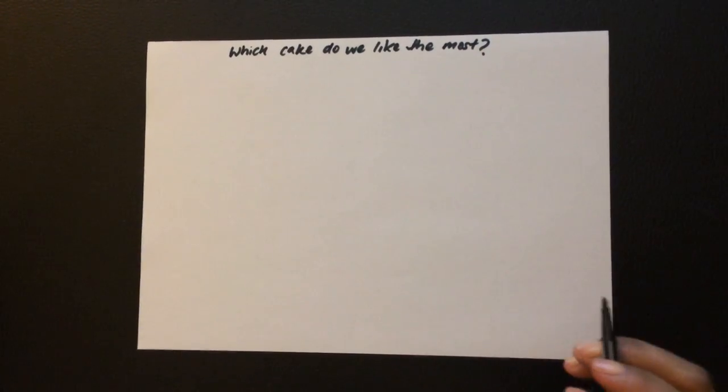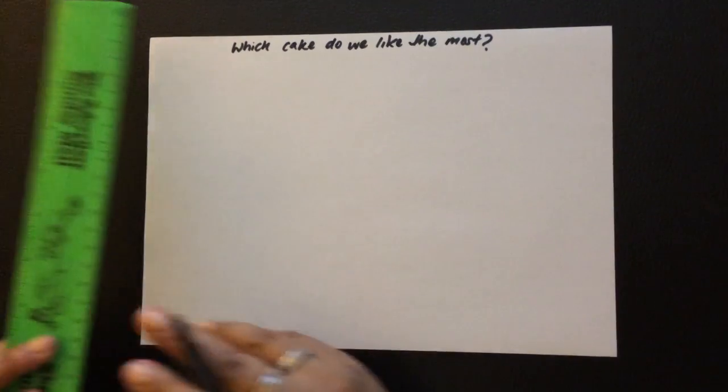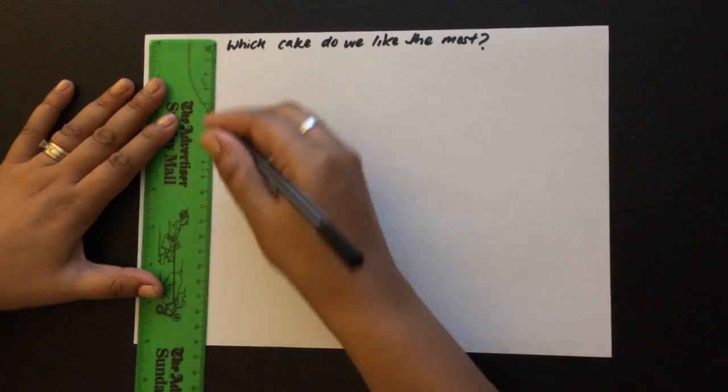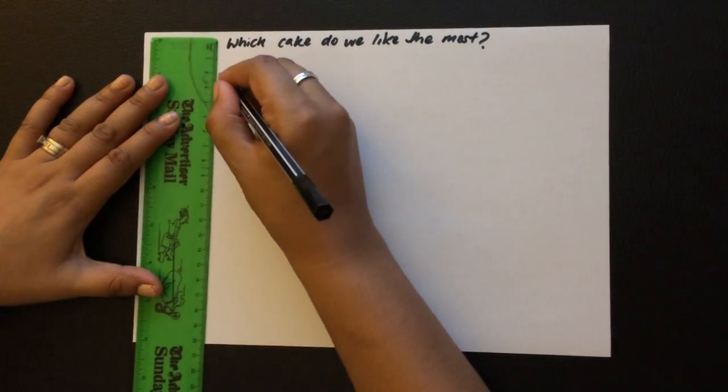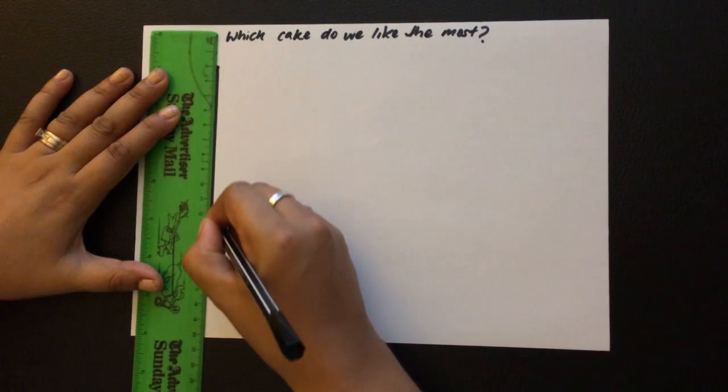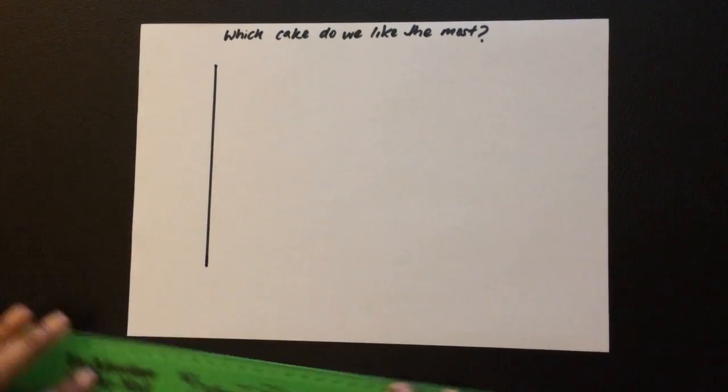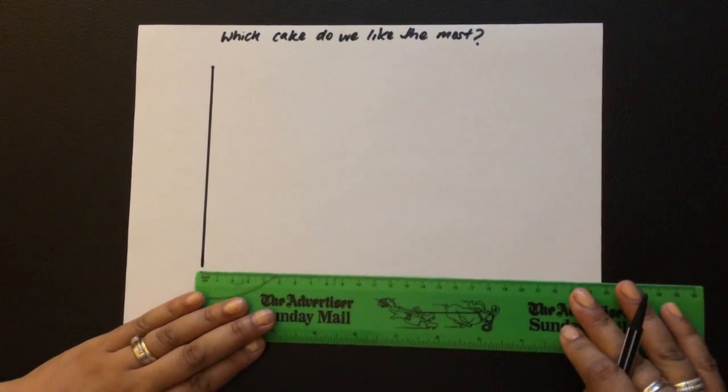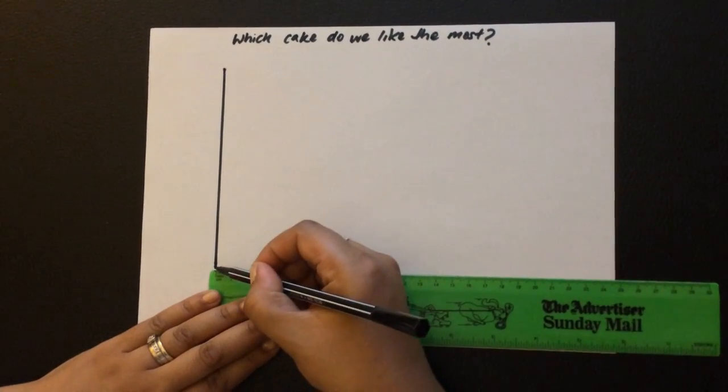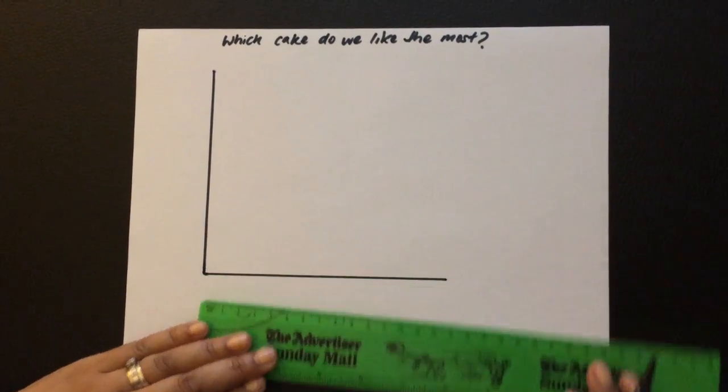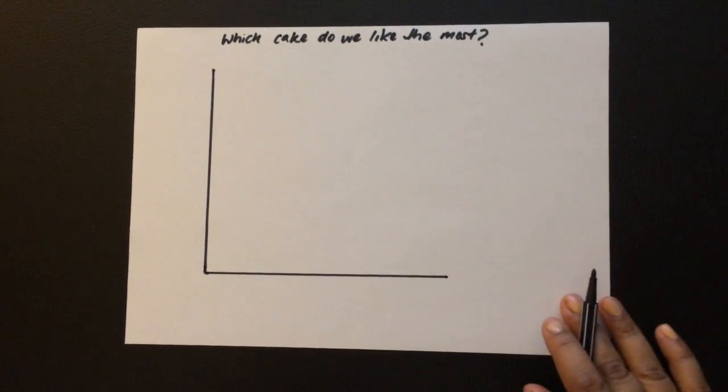Now we have two lines, one on the left hand side. You can use your ruler, just go straight down, and another line this way going from left to right. Now these lines are both called axes.